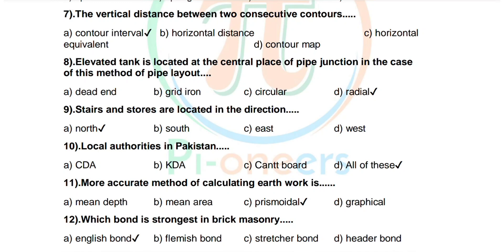Question 9: Stairs and stores are located in which direction? Options: north, south, east, west. Correct answer is north. Question 10: Local authorities in Pakistan. Options: CDA, KDA, Cantonment Board, all of these. Correct answer is all of these.